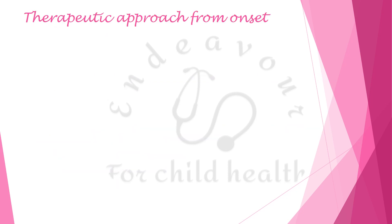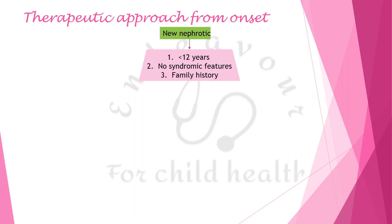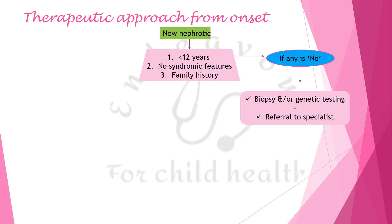KDIGO has recommended a new algorithmic therapeutic approach to nephrotic syndrome in children from the initial onset. A new nephrotic syndrome should first be evaluated in terms of three things: age less than 12 years or not, syndromic features present or not, and family history positive or negative. If the answer to any of these is no, the patient should undergo renal biopsy and/or genetic testing and be referred to a nephrologist. If the answer to all three is yes, start treatment with corticosteroids.